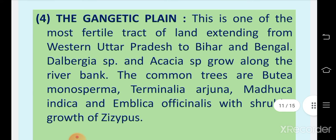The fourth region is the Gangetic Plain. This is one of the most fertile tracts of land extending from western Uttar Pradesh to Bihar and Bengal. Dalbergia species and Acacia species grow along the river bank. The common trees are Butea monosperma, Terminalia arjuna, Madhuca indica, and Emblica officinalis with shrubby growth of Ziziphus. Common crop plants here include wheat, barley, maize, sorghum, moong, cajanus, sugarcane, potato, and Brassica.